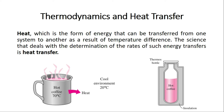Heat is a form of energy that can be transferred from one system to another as a result of temperature difference. The science that deals with the determination of the rates of such energy transfer is called heat transfer. For example, a hot coffee cup at 70°C in an environment at 20°C loses heat from the higher to the lower temperature. In contrast, a thermos bottle uses insulation that prevents the transfer of heat from the hot source to the cold source.